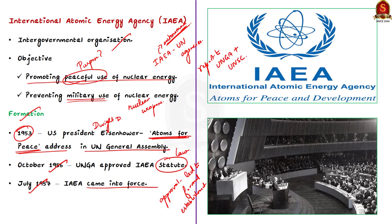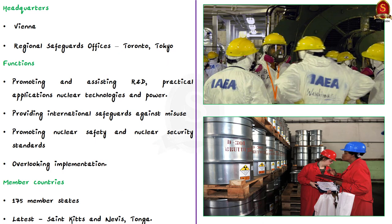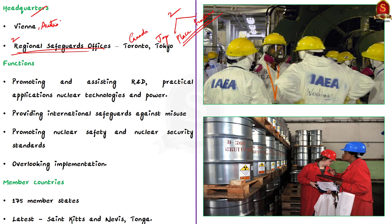Regarding its functioning, the IAEA has its headquarters in Vienna, Austria. In addition to that it has two regional safeguards offices located in Toronto, Canada and Tokyo, Japan.